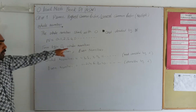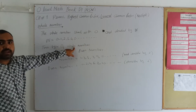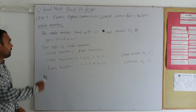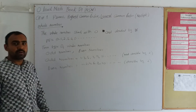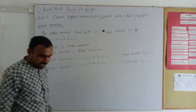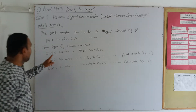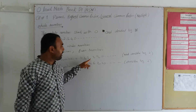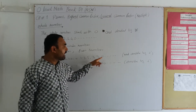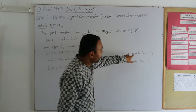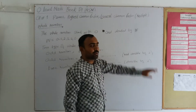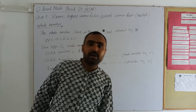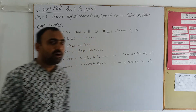There are two types of whole number: odd numbers and even numbers. What is an odd number? Odd numbers are 1, 3, 5, 7, 9, 11 — it means numbers not divisible by 2. A number not divisible by 2 is called an odd number.